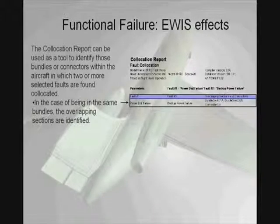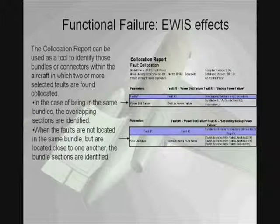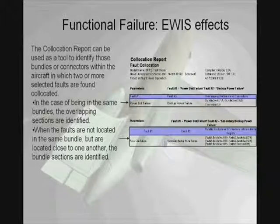This is an example of a fault co-location report, in which two faults are defined and the eWist is evaluated for a co-location between these two items. In this example, there is an overlap of these two faults in two bundle sections and a single connector. In the case that the faults are not located in the same bundle but are located close to one another, these bundle sections are identified. In this case, these two faults are found within six inches of each other in these three bundle sections.